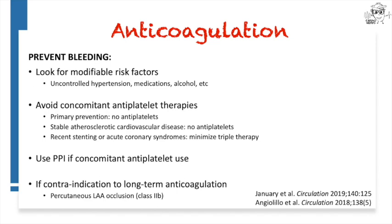An important topic is mitigating the risk of bleeding for patients on anticoagulation. Always look for modifiable risk factors for bleeding — uncontrolled hypertension, concomitant NSAID use or other medications, alcohol use. Avoid concomitant antiplatelet therapies, as they greatly increase bleeding risk. If someone was using aspirin for primary prevention and now needs anticoagulation for AFib, stop the aspirin. Even with stable atherosclerotic disease like coronary artery disease — but without a recent stent or recent myocardial infarction — they should not be on antiplatelet therapy.